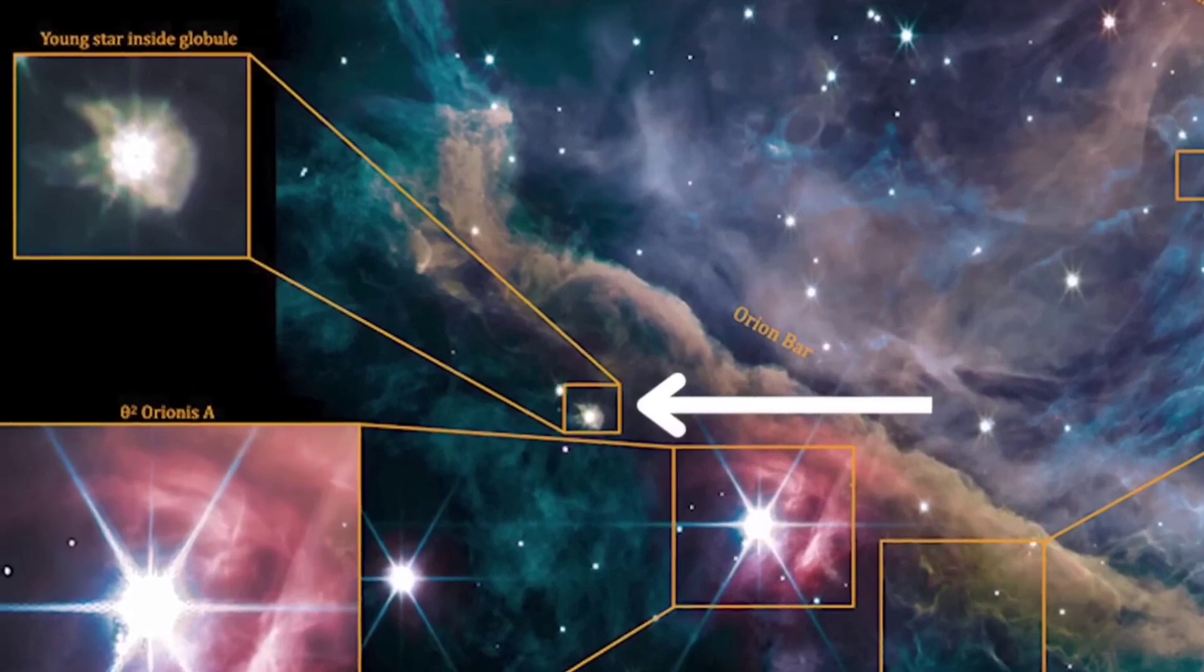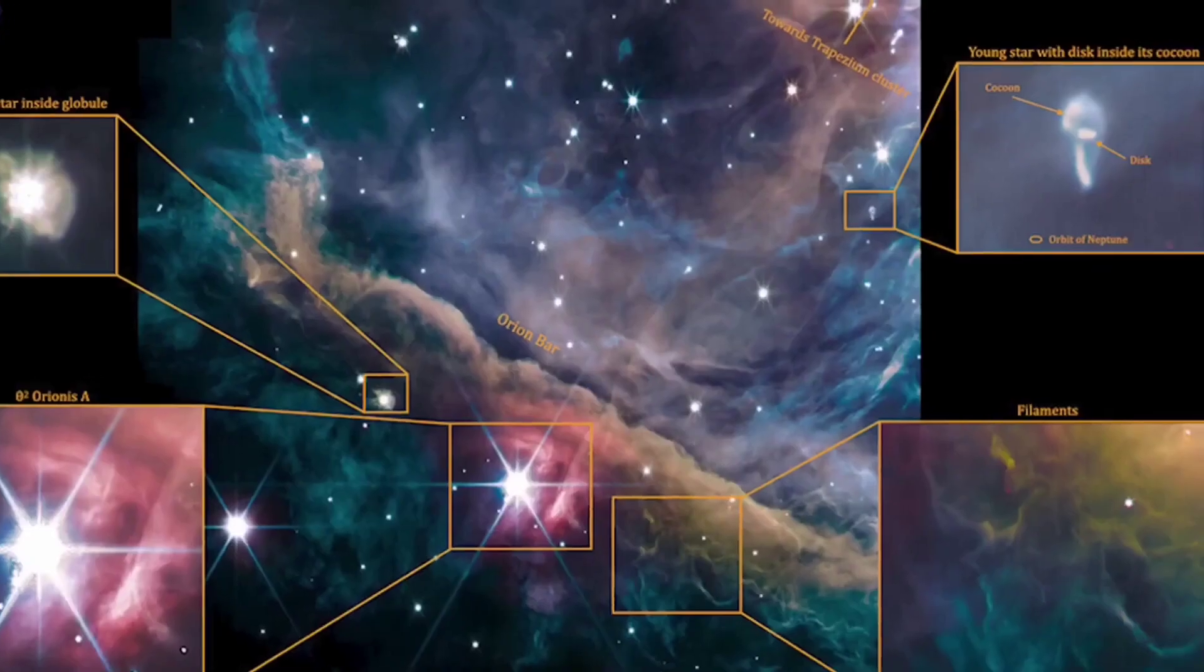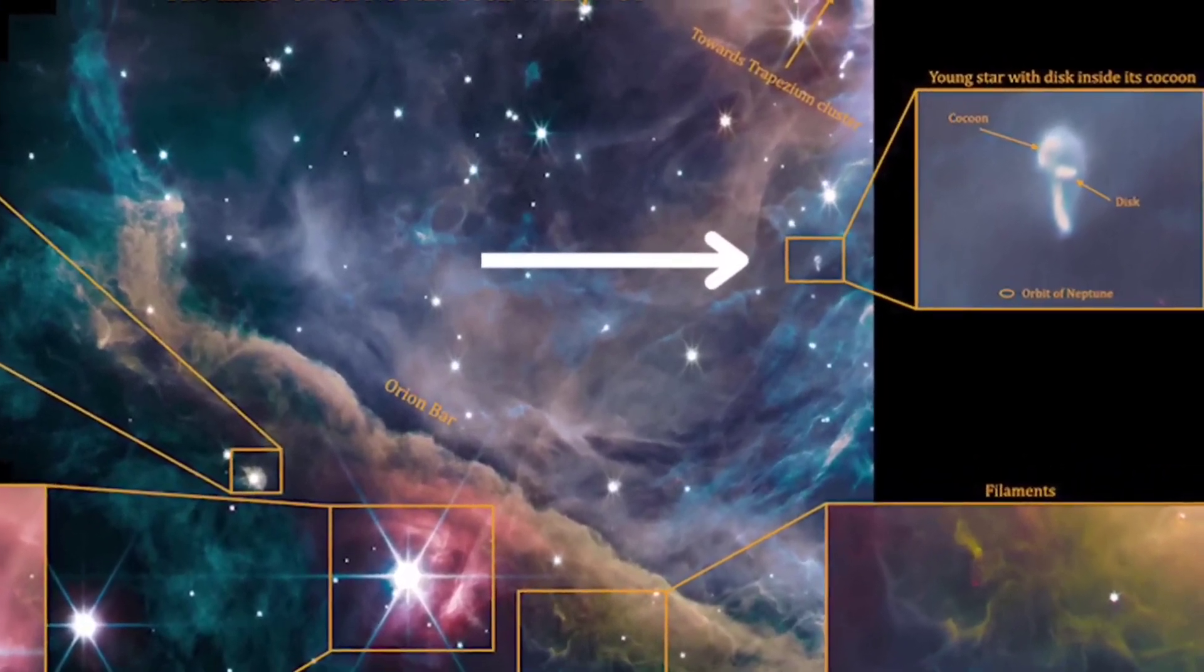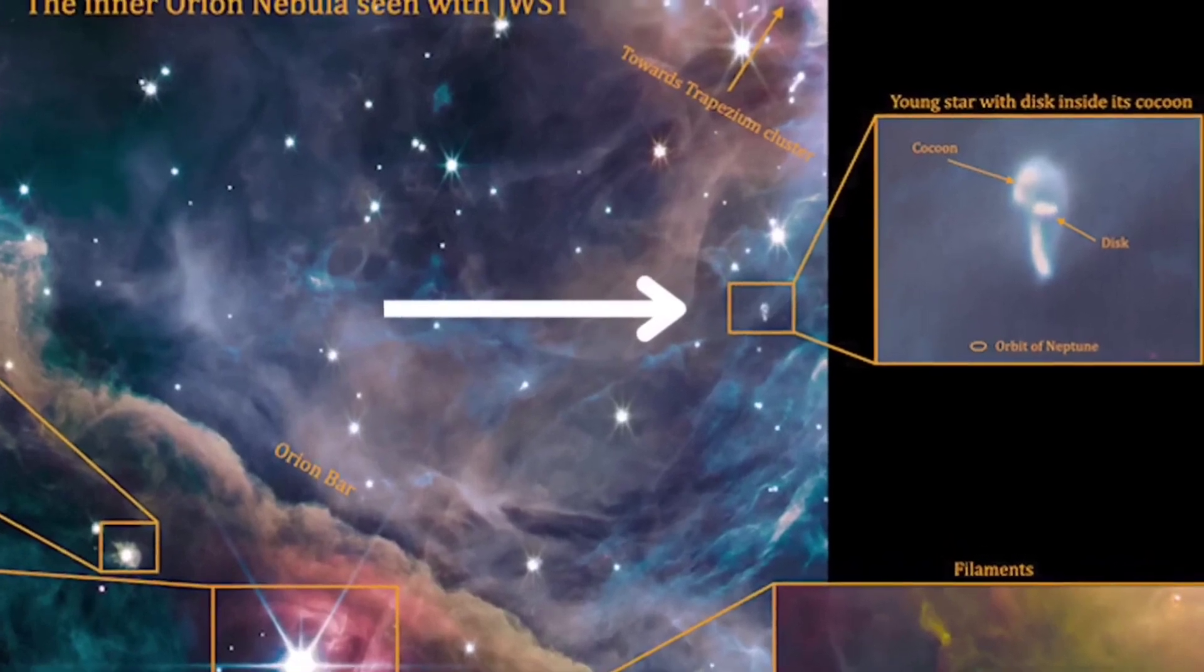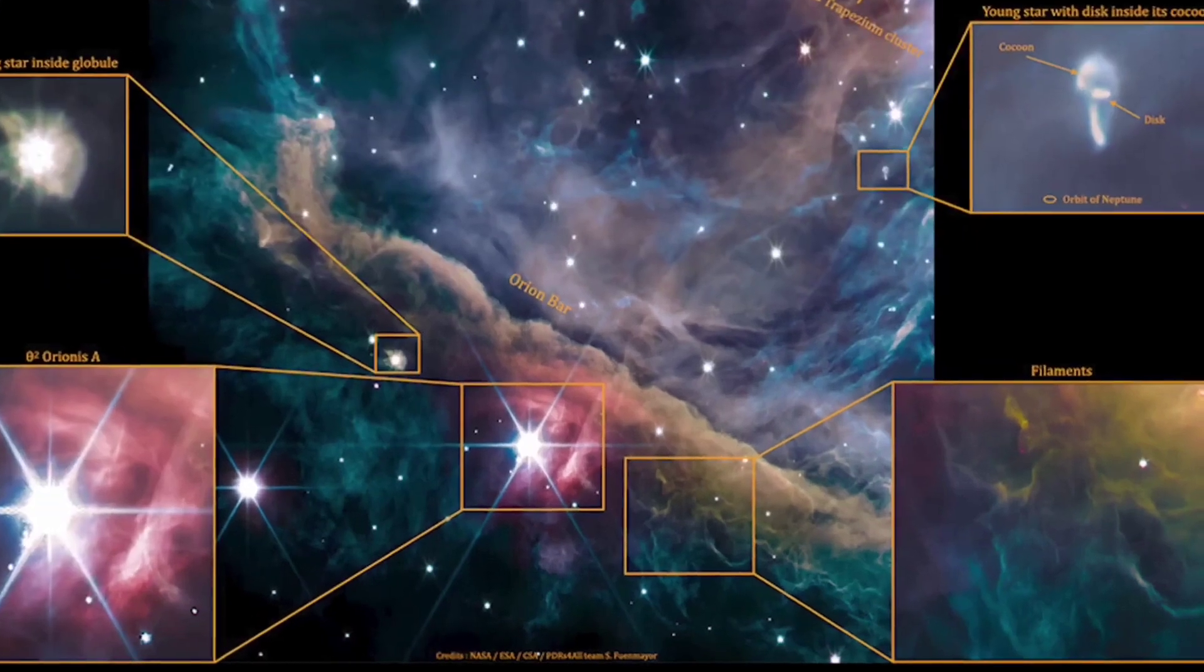Other objects in the image include globules, dense clumps of material with baby stars inside, and a young growing star with a disk of material around it. That disk is being evaporated from the outside by the radiation from the trapezium stars. Nearly 180 objects, called proplids, have been found in the Orion Nebula.